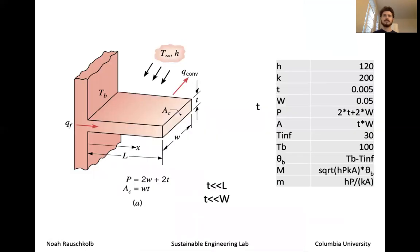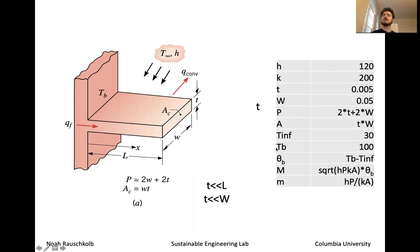For this video I plugged in standard values: H = 120 W/m²K (from one of the homework problems), thermal conductivity k = 200 W/mK (typical of aluminum), thickness of 5 mm, width of 5 cm. Perimeter and area are calculated from those two. Ambient temperature T-infinity is 30°C, base temperature is 100°C (right at boiling), and everything else is calculated from the formulas given.